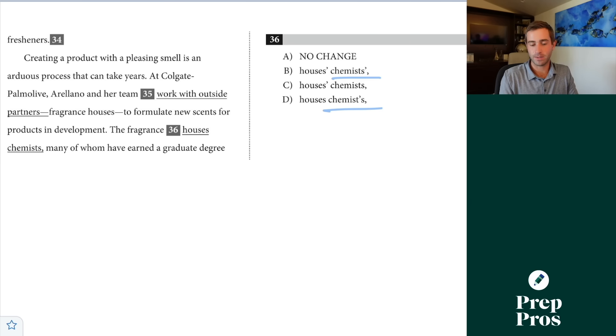The easiest way to approach these questions is always start with the last word that has an apostrophe. So the fragrance houses chemists many and see if it could be showing possession of the thing that follows. Well the chemists can't possess many. That many is just describing the chemists. We're not saying the many of the chemists. This doesn't make any sense. So that tells me b and d are both out because they can't be possessing many. Now we get down to a and c. And here we're just choosing whether we're showing no possession or possession. But we are saying the fragrance houses are showing possession of the chemists. We're saying these are the chemists of those fragrance houses. That's how we can tell that c is our correct answer.